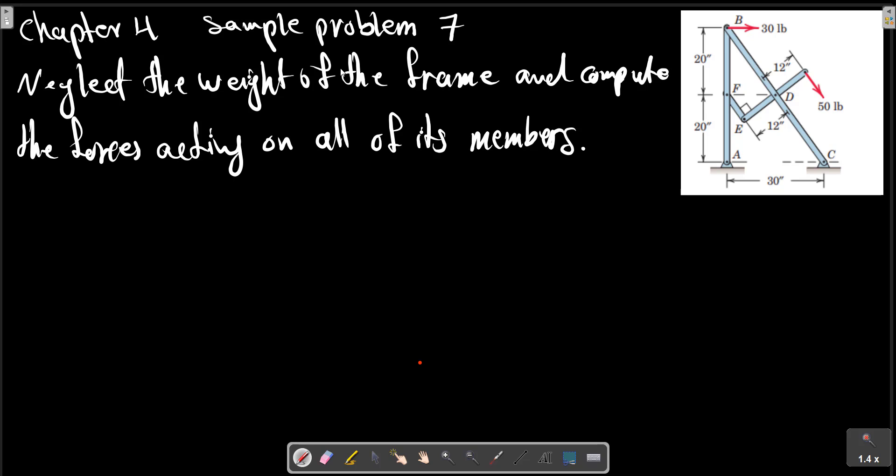Chapter four, sample problem seven. Neglect the weight of the frame and compute the forces acting on all of its members. We have two support points, a pin support.